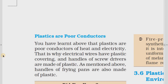Plastics are poor conductors of heat and electricity. That is why electrical wires have plastic covering — inside the wire is copper or aluminum, covered with plastic on the outside. Handles of screwdrivers are made of plastic so you cannot get an electric shock. Handles of frying pans are also made of plastic because it is heat-resistant.